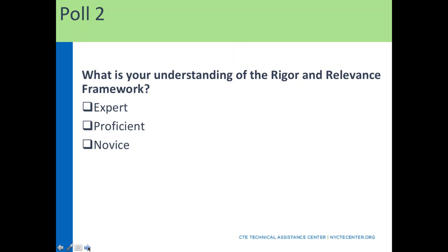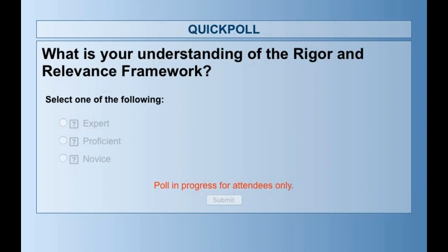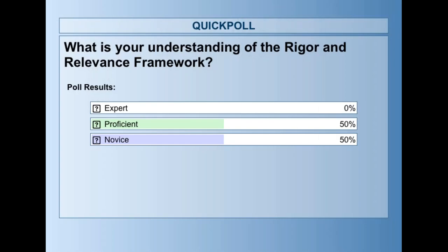For the next poll question, the rigor and relevance framework is linked to the work of the International Center for Leadership and Education and New York's CTE Center. Give me an idea of your understanding of this framework — it's okay if you are just beginning. I just need to know how fast to go through these next slides. So we are alternating between novice and proficient, about half in each area. Let me just talk a minute about this.